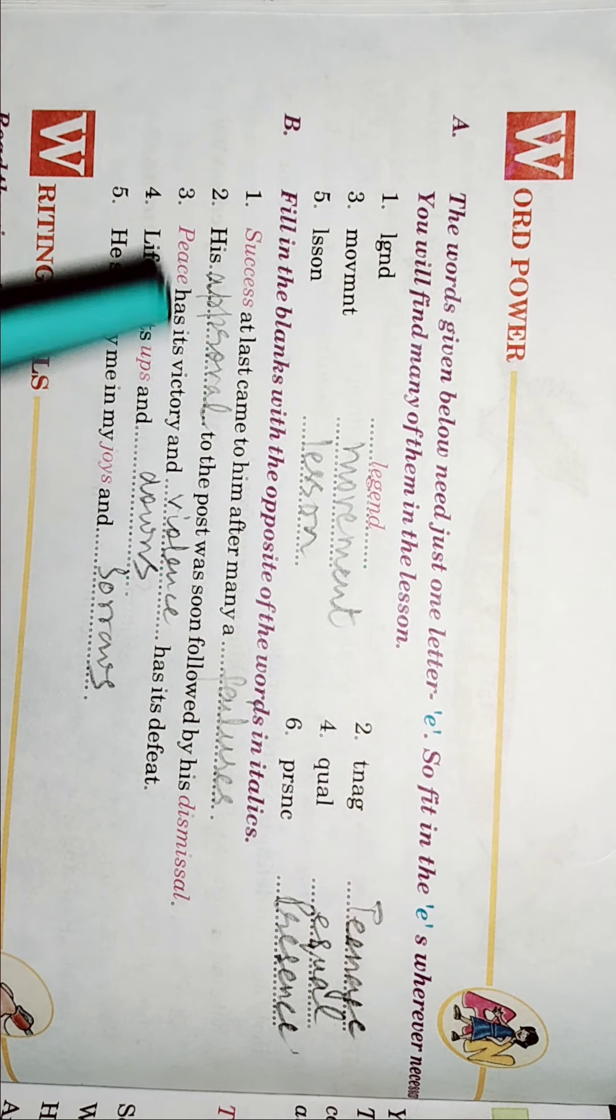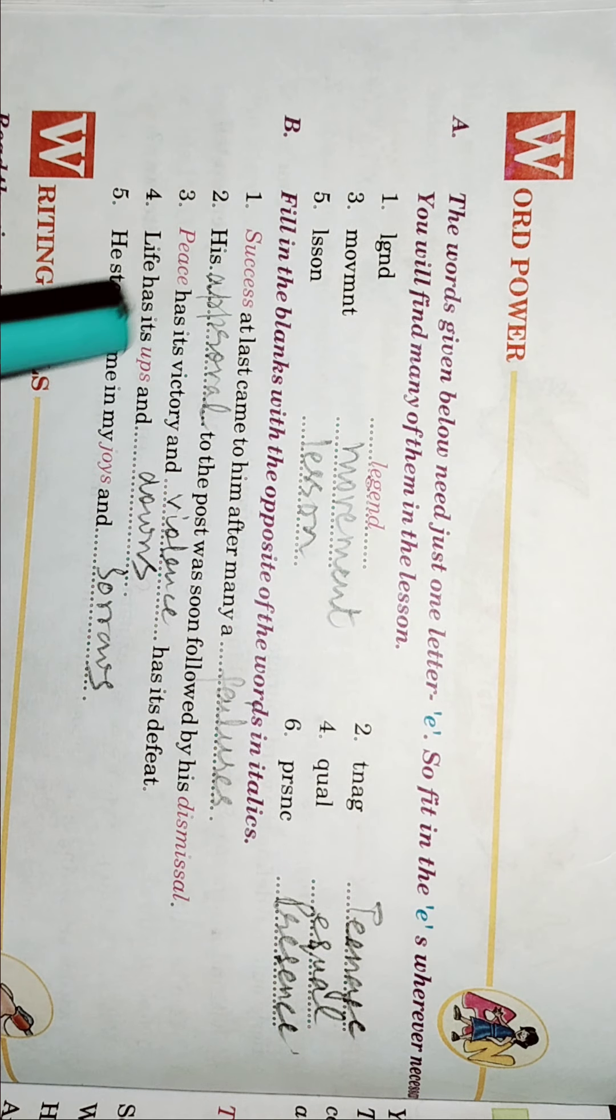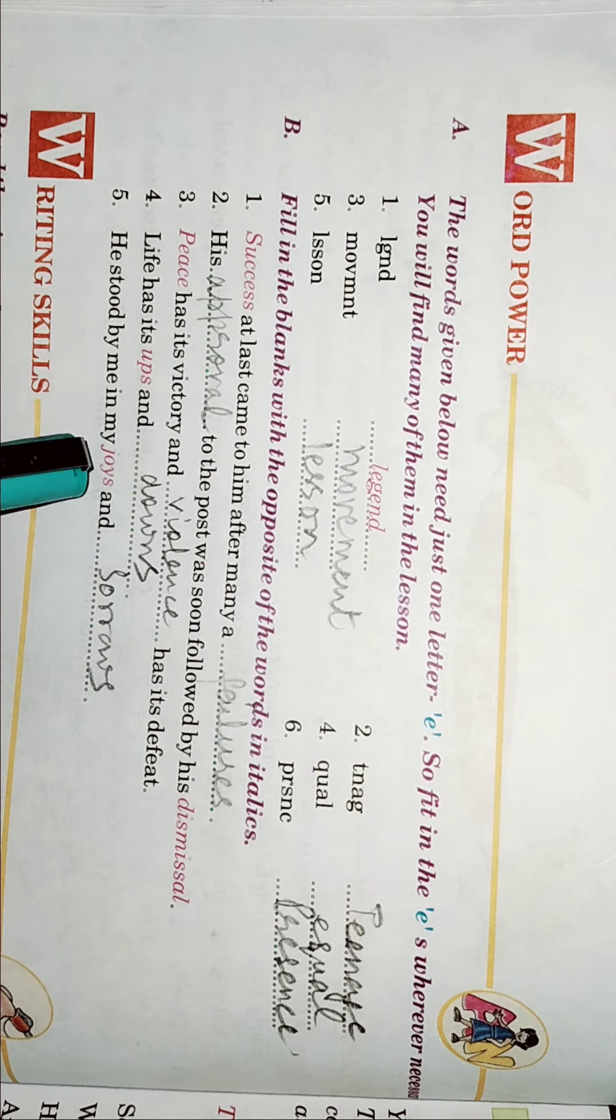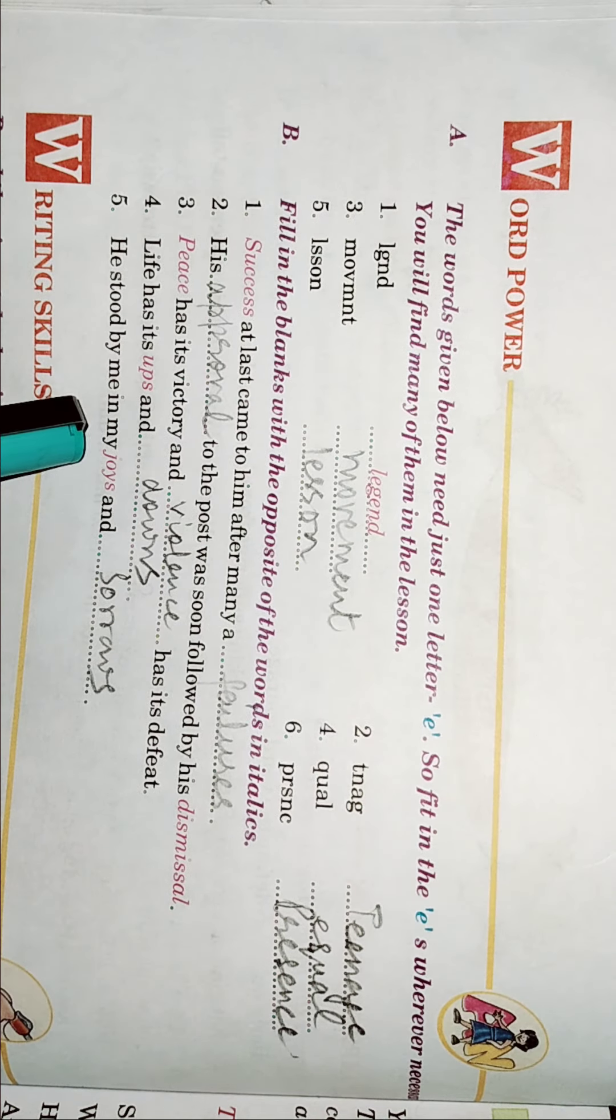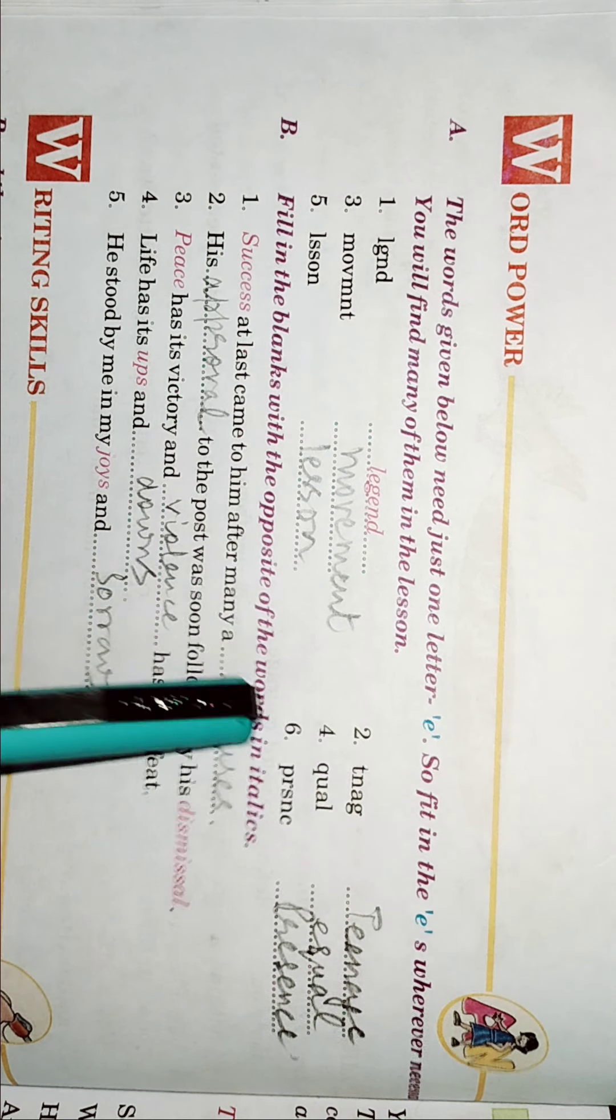Peace has its victory and peace composite hua. Violence has its defeat. Life has its ups and downs. He stood by me in many joys and sorrows. So, all these are the antonyms. We call opposites as antonyms. Is it clear to all of you?